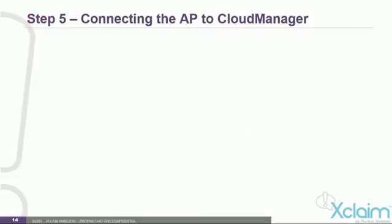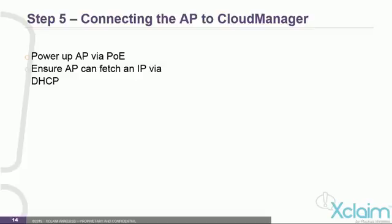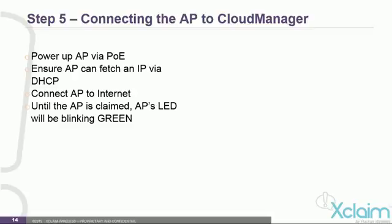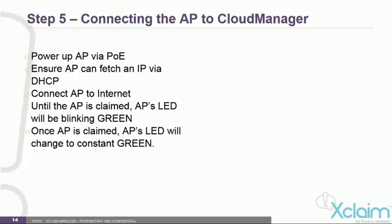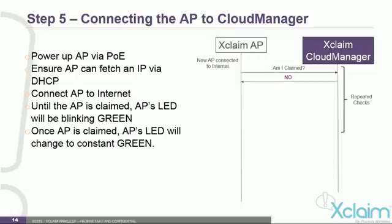The final step is to connect your access point to Cloud Manager. Power up the access point and make sure the AP can fetch an IP address via a DHCP server. If the AP has a static IP address, it will need to be changed as Cloud Manager does not support static IP addresses. Make sure the AP is connected to the internet. Until the AP is connected to the Xclaim Cloud Manager, as long as it has internet connectivity, you should see a blinking green LED. Once connected to Cloud Manager, it will go to a constant green.